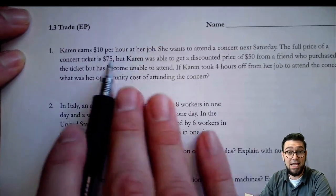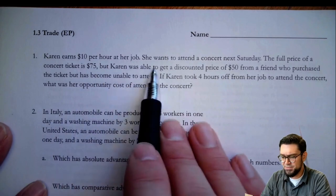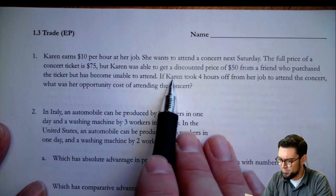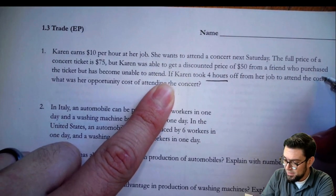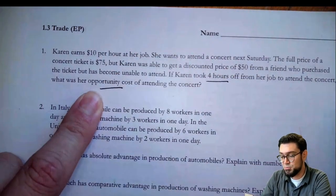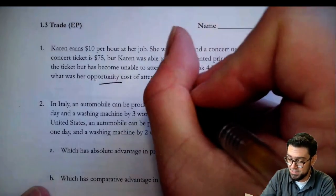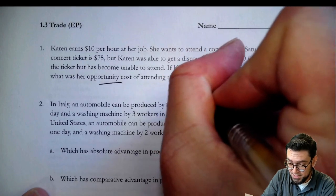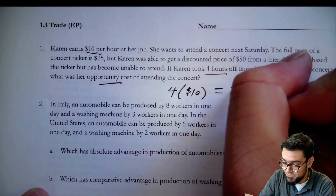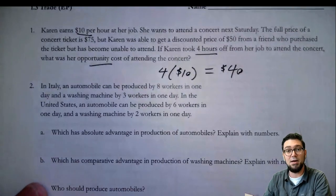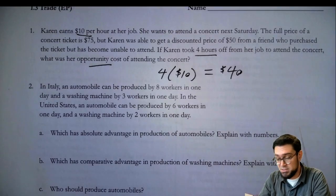The first part of this problem says that Karen earns $10 an hour at her job. She goes to a concert Saturday. The price was $75. If she takes four hours off from her job, what's her opportunity cost? Well, if she takes four hours off, it's what she would have earned during those four hours. So four times $10, which equals $40. That's because that's what she gave up.